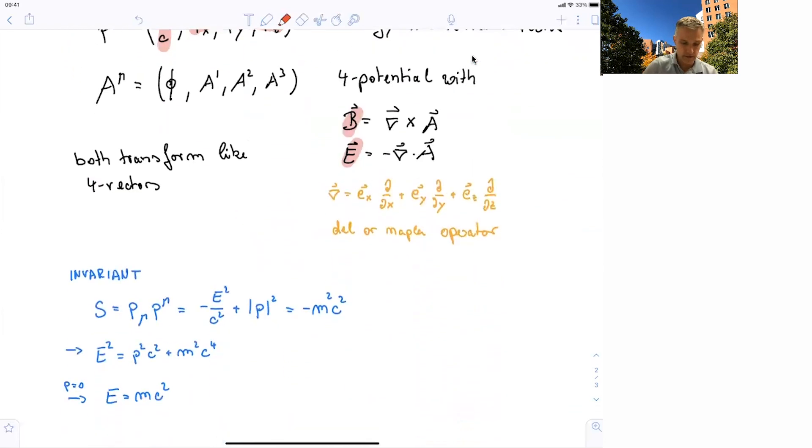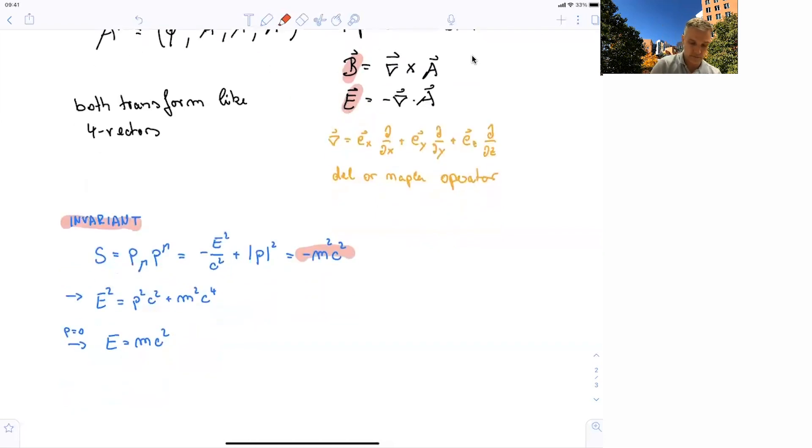But if you then look at this, the invariant four-vector, which is a product of the energy-momentum vector, we find that the first component is the energy squared, or minus the energy squared over c², plus the three-component vector of the momentum squared, and that's constant. We can just here name this mass, or minus mass squared times c². So if you rewrite this, you find this energy-momentum-mass relation: E² equals p²c² plus m²c⁴. And if you look at this for particles of zero momentum, in which case this component here is zero, you find the equation E equals mc².